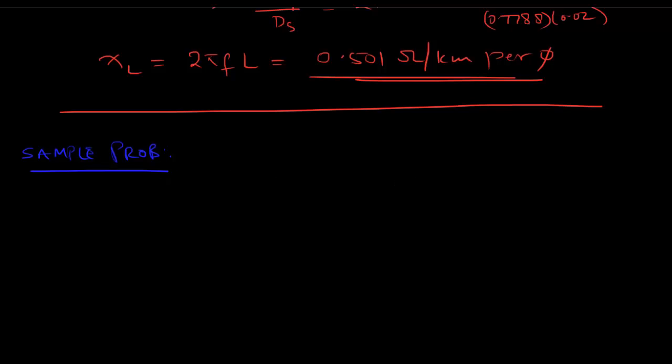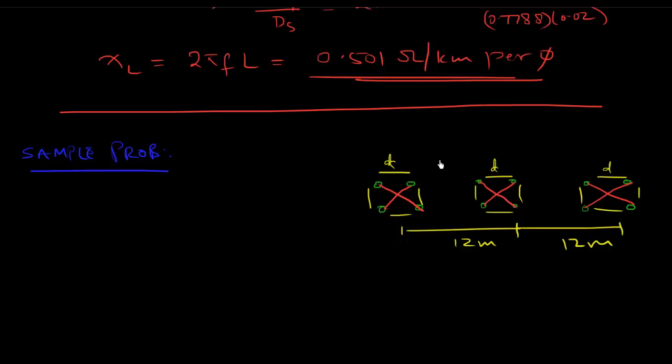So what I'm going to do is leave you with a sample problem. In our sample problem, let us assume a four bundle conductor for each of the three phases. Let's draw these spacers out. So those are your spacers there, and I'll give you the distances. The distance - let's say between this and this is 12 meters, between this and this is also 12 meters. Let's say the distance d - this is all d here, right? All of these distances are d.